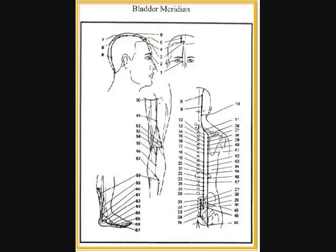UB45: cough, asthma, pain of the shoulder and back. UB46: difficulty swallowing, hiccup, vomiting, belching, pain and stiffness of the back.